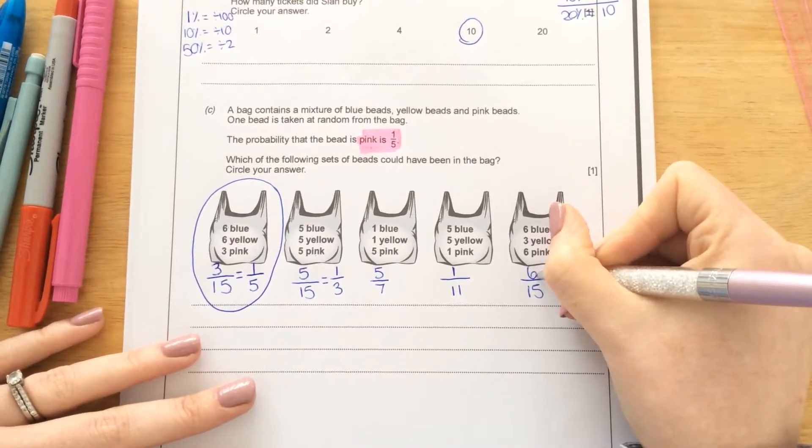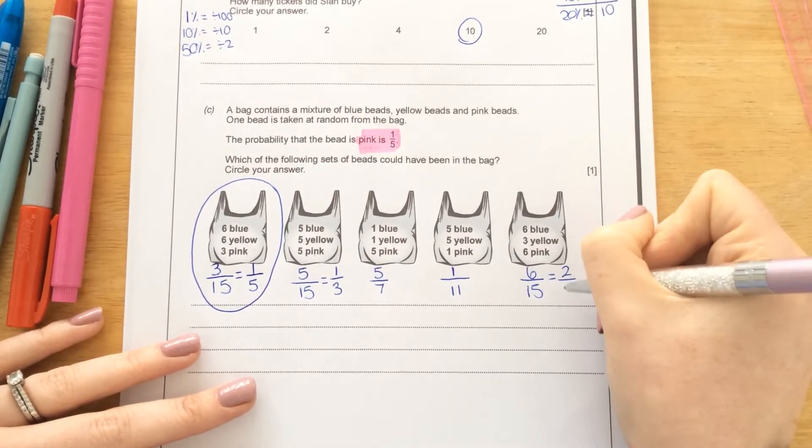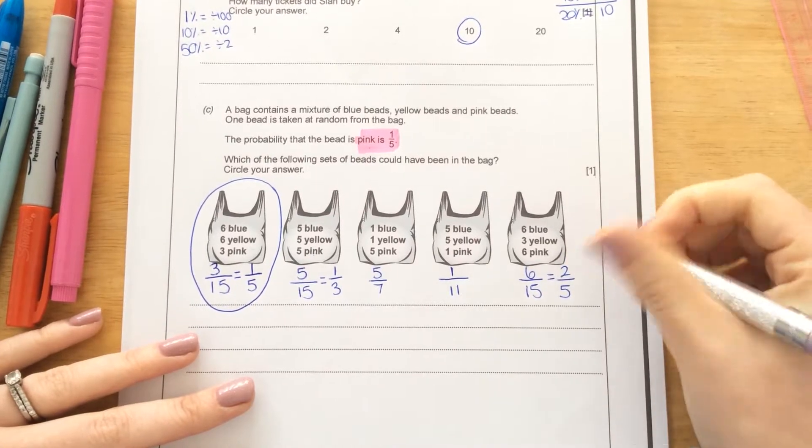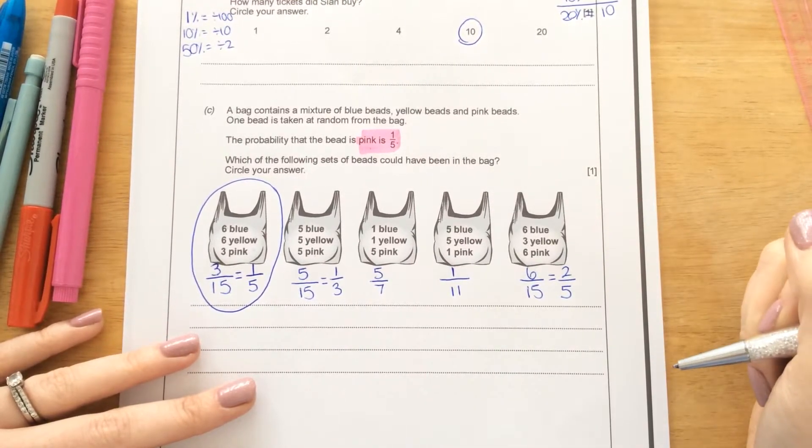How many times does 3 go into 6? Twice. How many times does 3 go into 15? Five times. There's nothing that goes into 2 and 5. So that's the simplest it could possibly be.